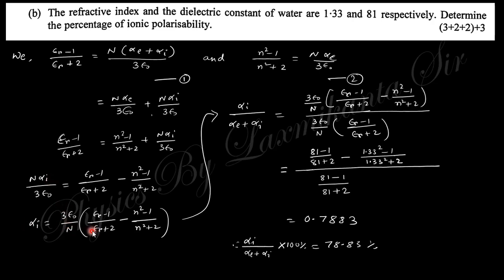So you just put this value here, you will obtain this expression. This is the expression of alpha_i, the ionic polarizability. When you divide by these things, you will obtain this expression. So finally you will obtain the ionic polarizability percentage.